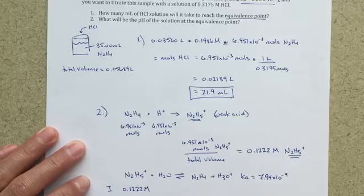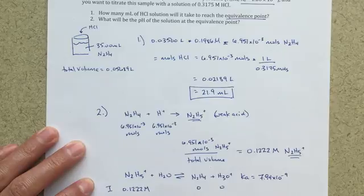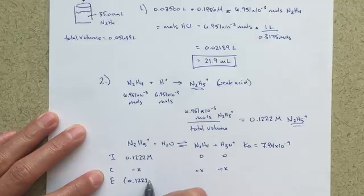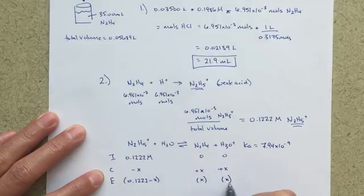And this becomes a simple ice table, minus X, 0, 0 initially, plus X, plus X, 0.1222 minus X, X, and X.